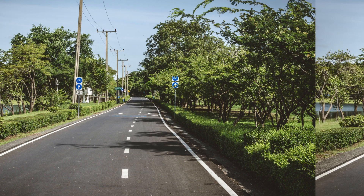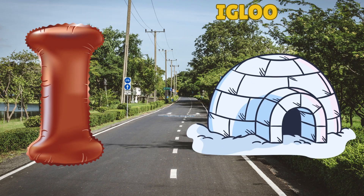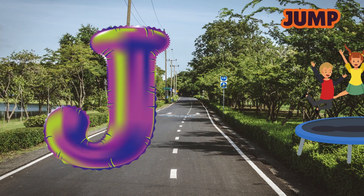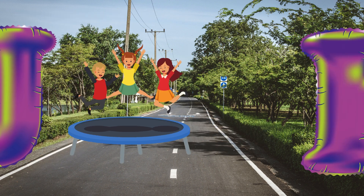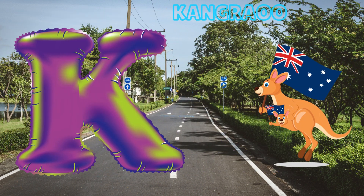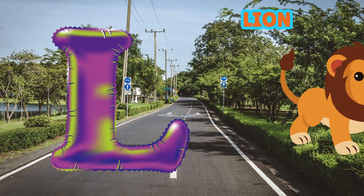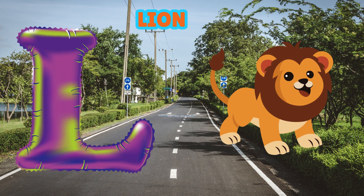I is for Igloo, I-I-Igloo. J is for Jump, J-J-Jump. K is for Kangaroo, K-K-Kangaroo. L is for Lion, L-L-Lion.